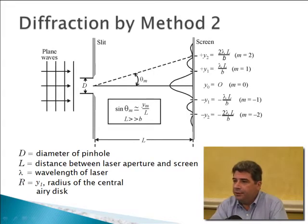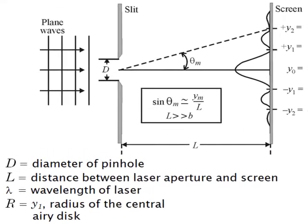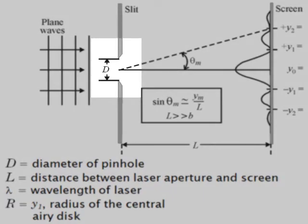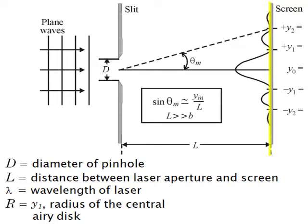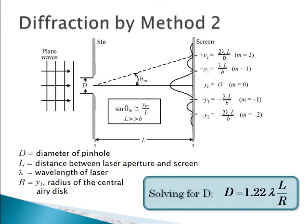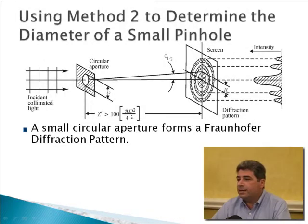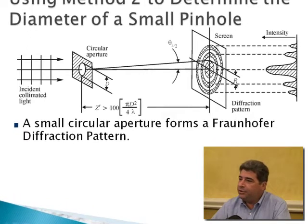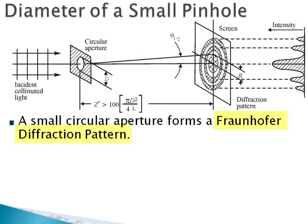Let's continue with diffraction by method number two — the pinhole. On the left we have our waves emanating from the laser, and we have the pinhole as the slit. On the right we have our screen, where we saw concentric circles of dark and white rings. Using the formula, everything is known except the diameter of the pinhole: we know the wavelength of the laser, the distance between the pinhole and the screen, and we can measure the distance between two adjacent dark rings. By the way, we call this the Fraunhofer diffraction pattern.